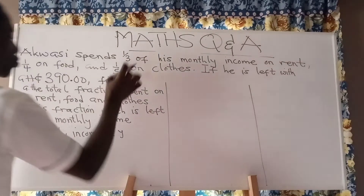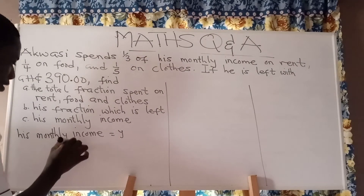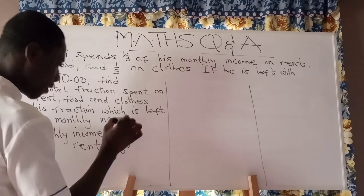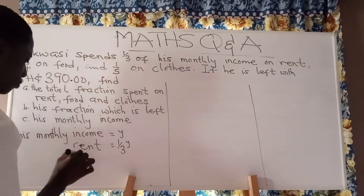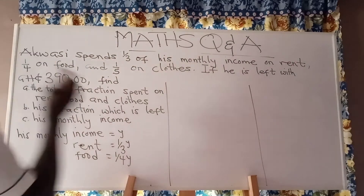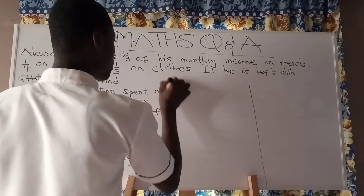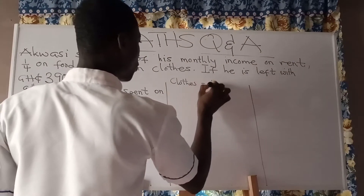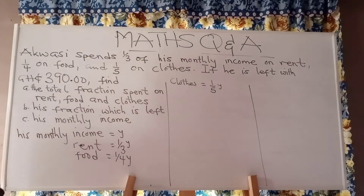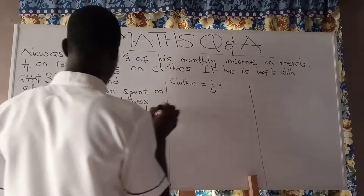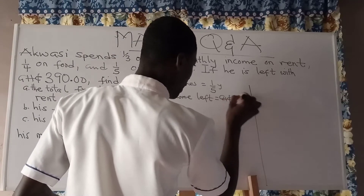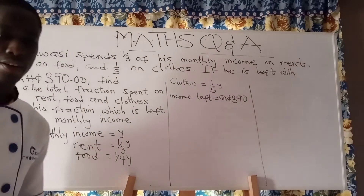The fraction spent on rent is one third, so rent is one third of Y. Food is one fourth of Y. Clothes is one fifth of Y. And we know he is left with 390 Ghana cedis after spending the money, so income left is 390 Ghana cedis.